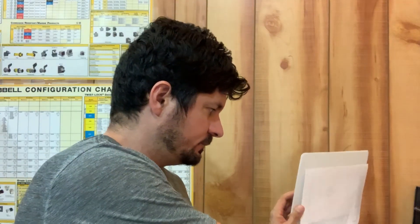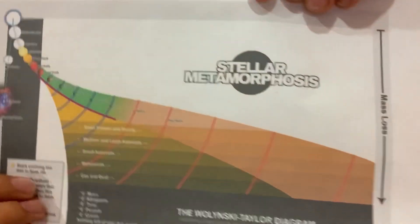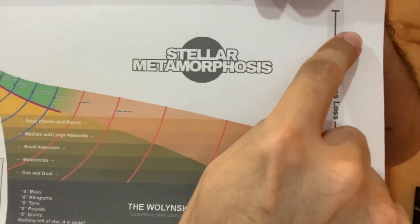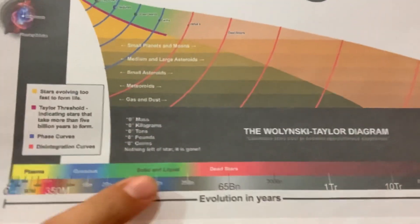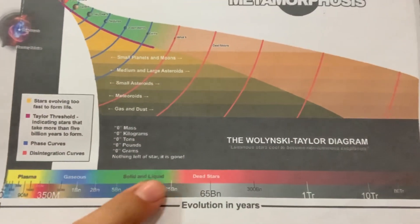Angular momentum should also correlate as a third factor on the same graph. Not the same graph — there are different variables. The graph has age and mass. The Walensky-Taylor diagram has mass loss on the x-axis, mass is lost, and age is down here.